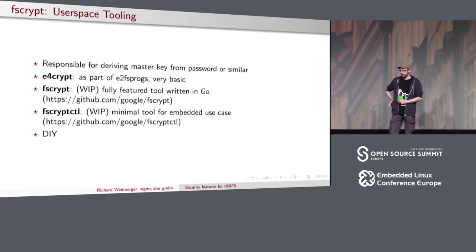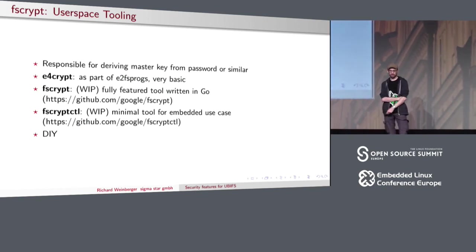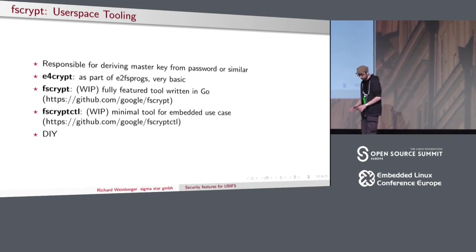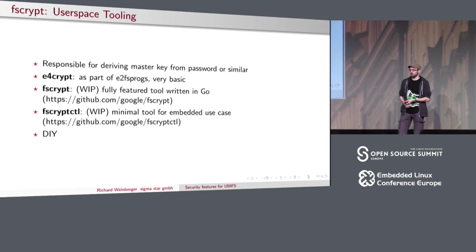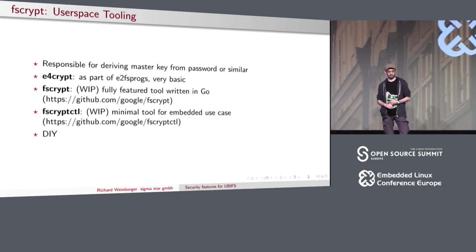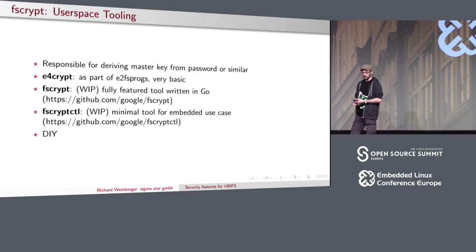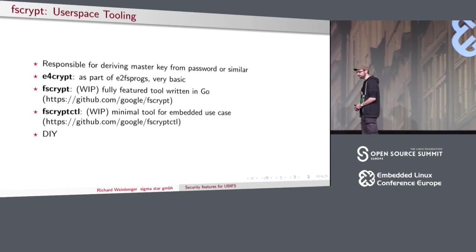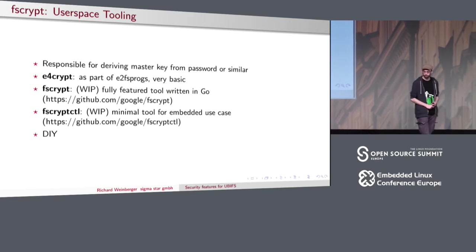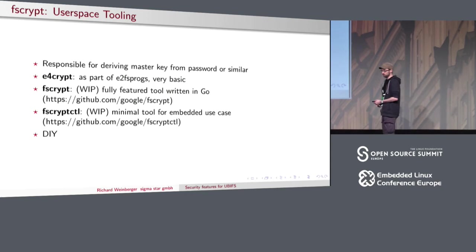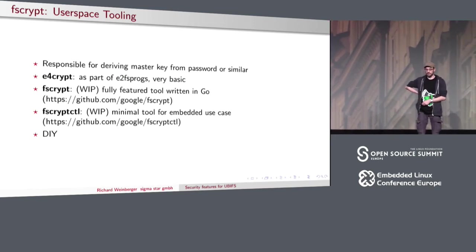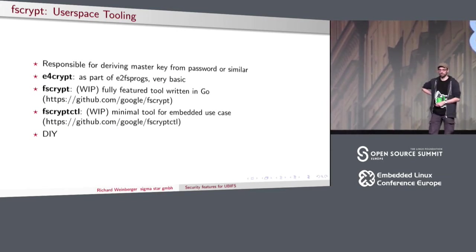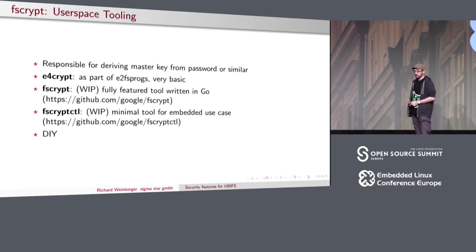There are several tools to work with FSCrypt. The oldest is e4crypt, just a testing tool for ext4 that only works with ext4. There's fscrypt, a larger tool written in Go that also handles key derivation for you — deriving the master key from your passphrase — but since it's written in Go it's rather large and not suitable for embedded use. There's also fscryptctl, written in C and minimal, which can be used in embedded cases. Or just write your own — we wrote such a tool in about 100 lines of C. Usually you run this in the initramfs, and I hope we get such a tool in BusyBox someday.